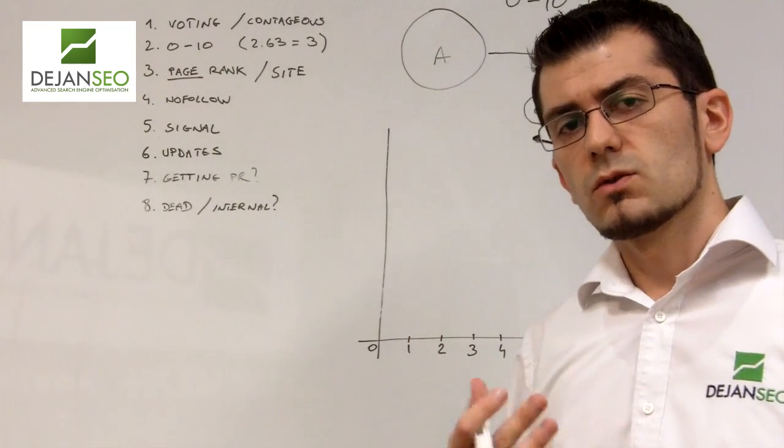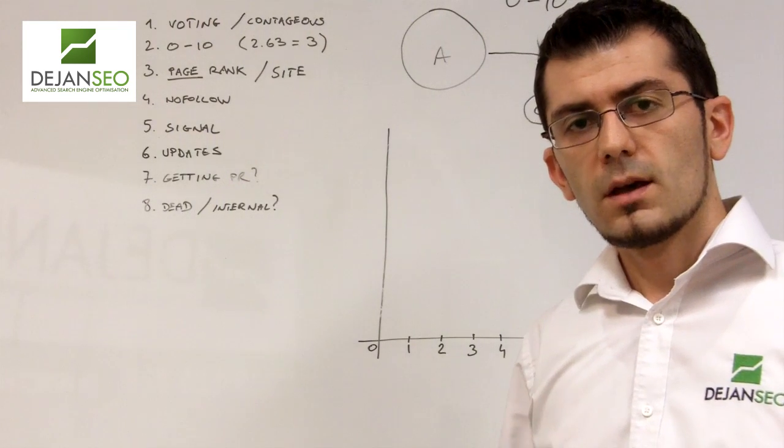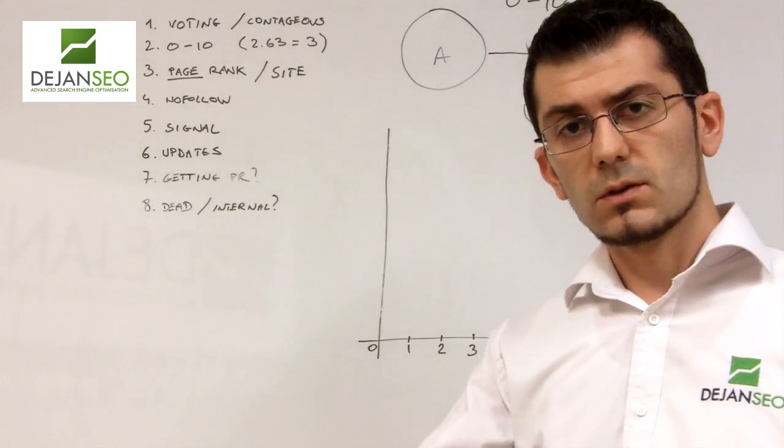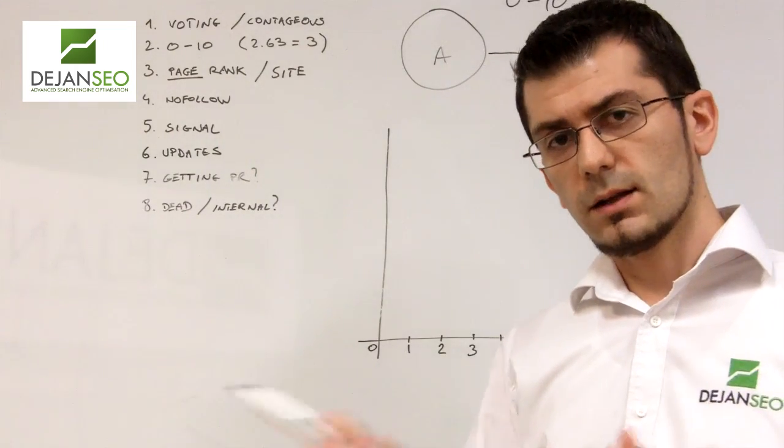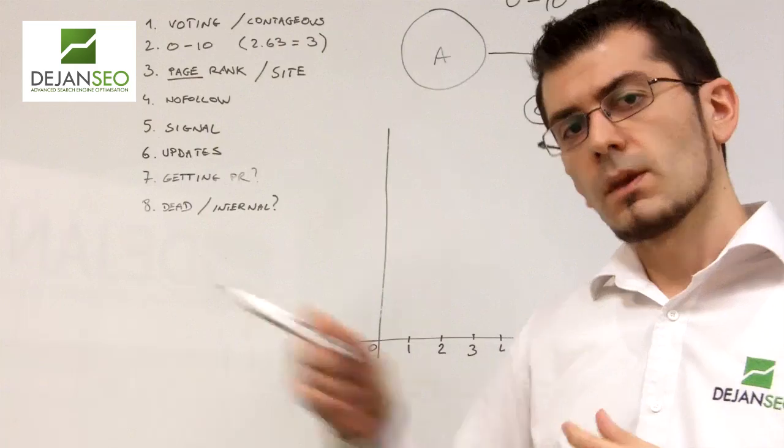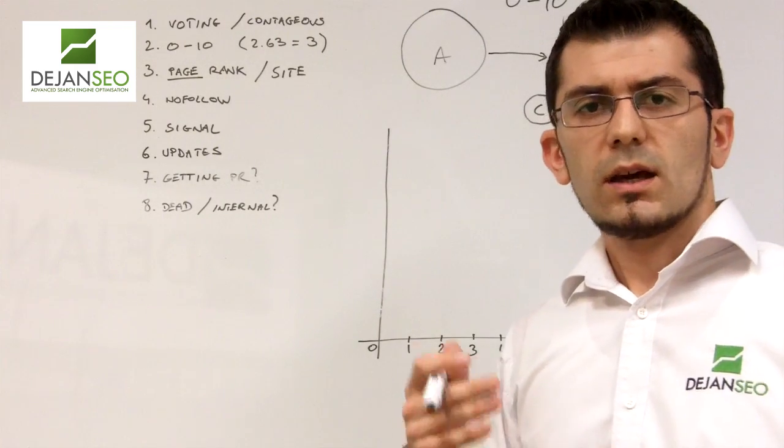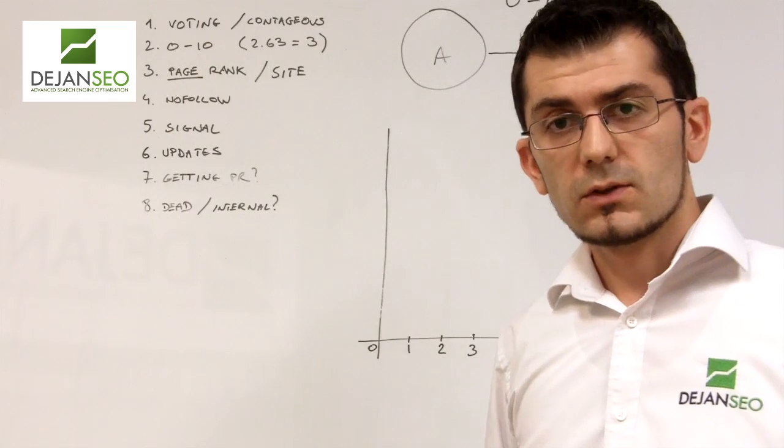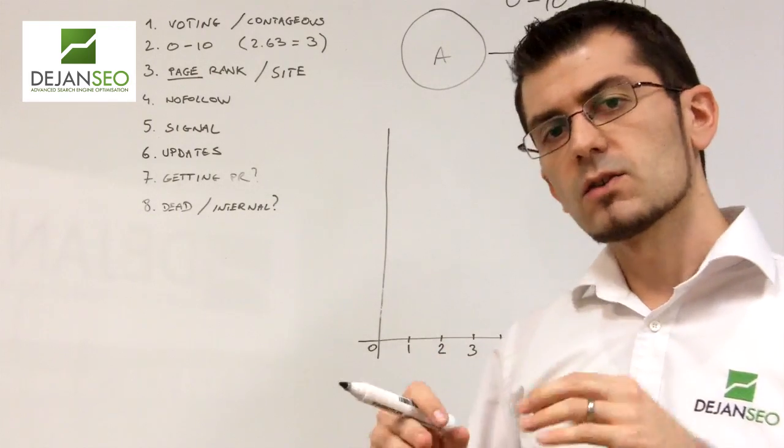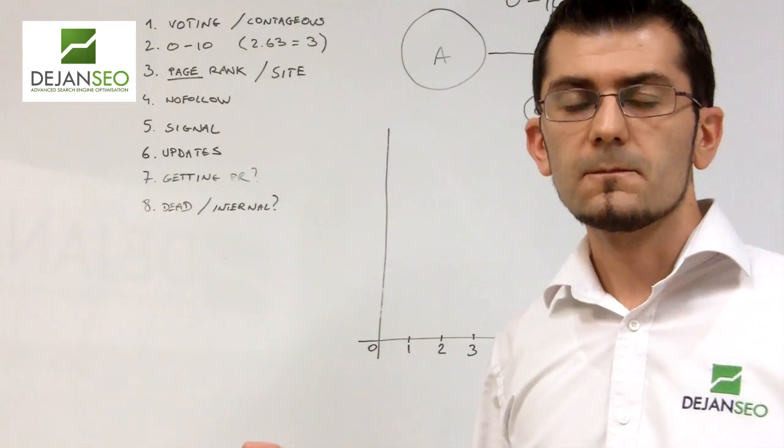One thing that webmasters should really know is that PageRank updates all the time. Essentially, as soon as Google recognizes a link pointing to your site, it will calculate that chunk of the PageRank that link lends to you and assign a new PageRank value to you. Obviously, Google is trying to be smart about their resources so they are doing public PageRank updates pushing the values to the toolbar only several times a year, usually around 4 times a year.